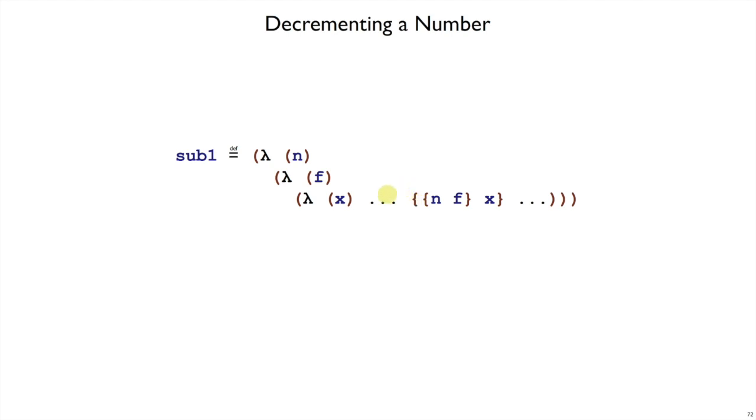In the case of add1, we could add one more use of f. Here, if we've already done it n times, we would have to remove one use of f. But it's too late for that. There's no way to undo a call to f. There's no way in general to get the inverse of the function f. So this strategy doesn't quite work for sub1.